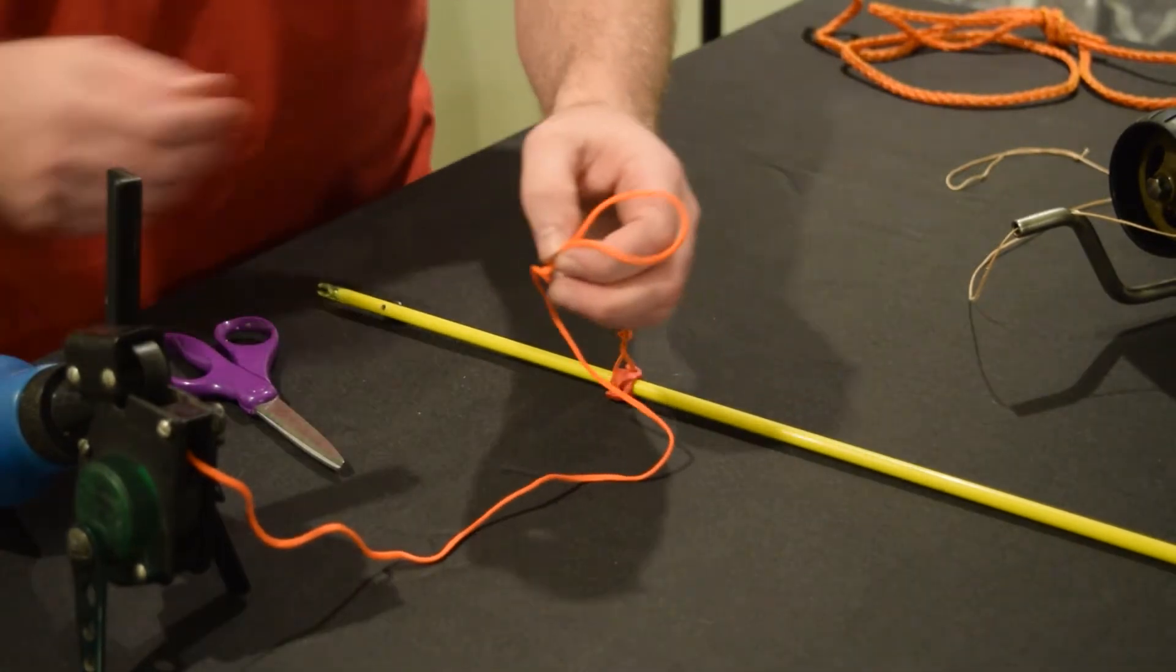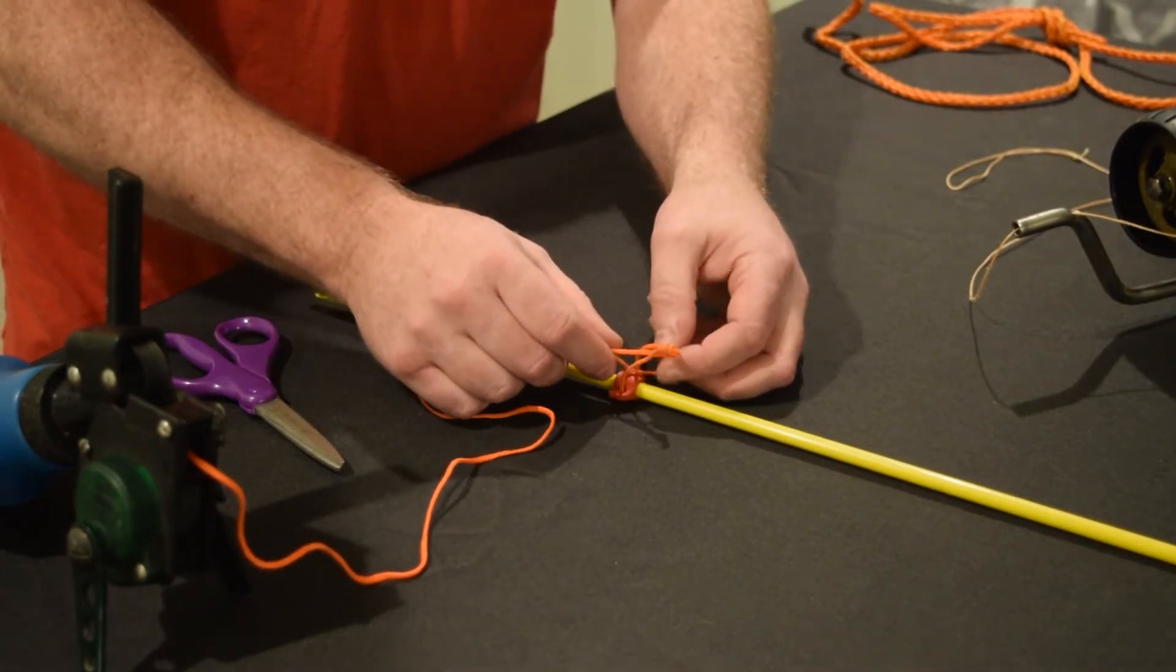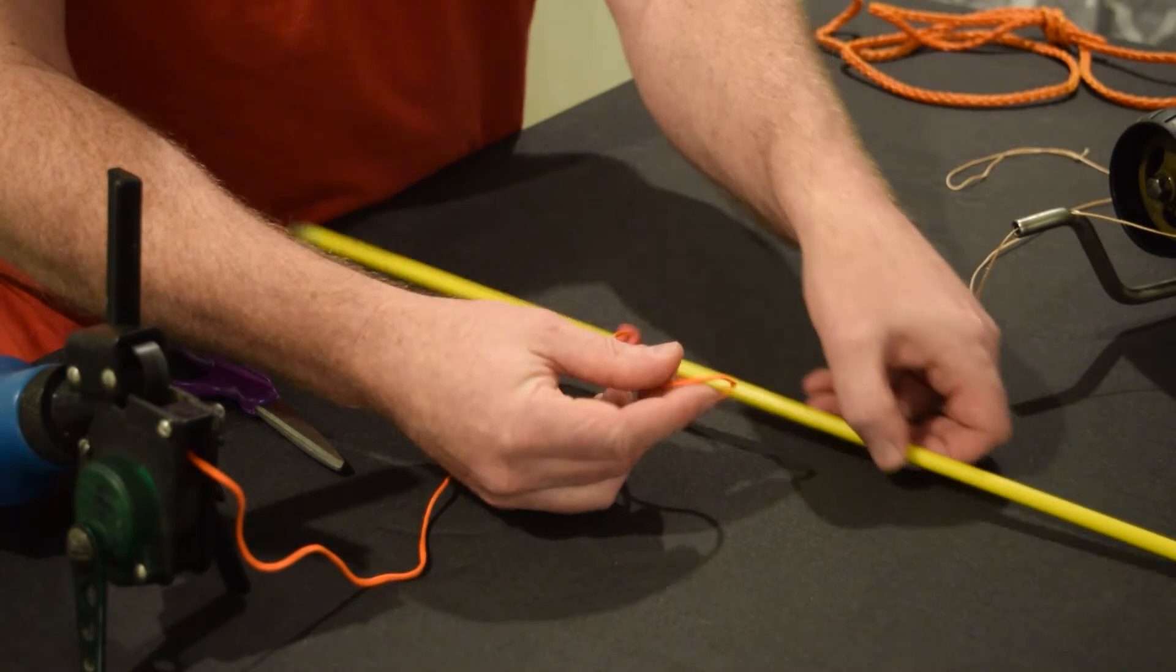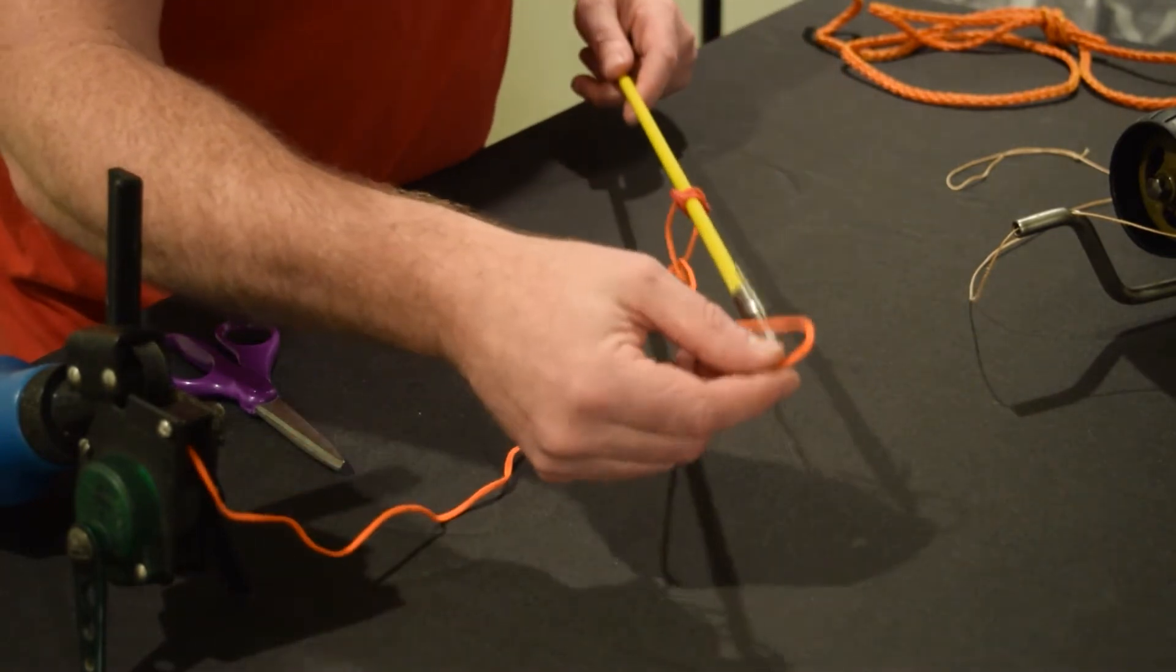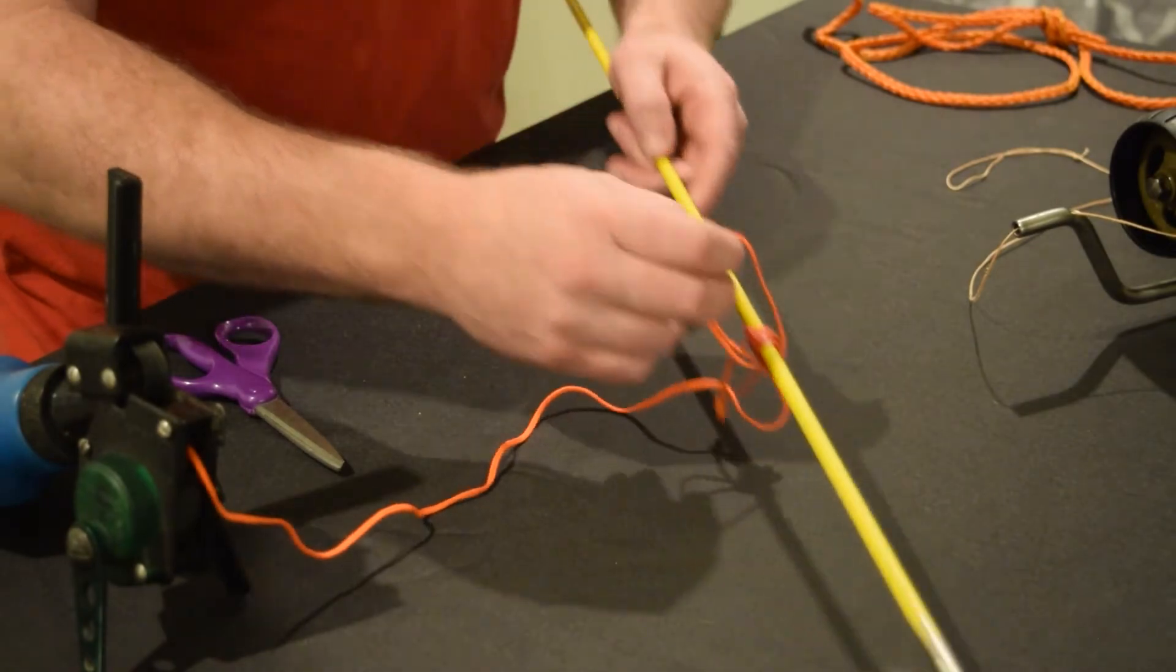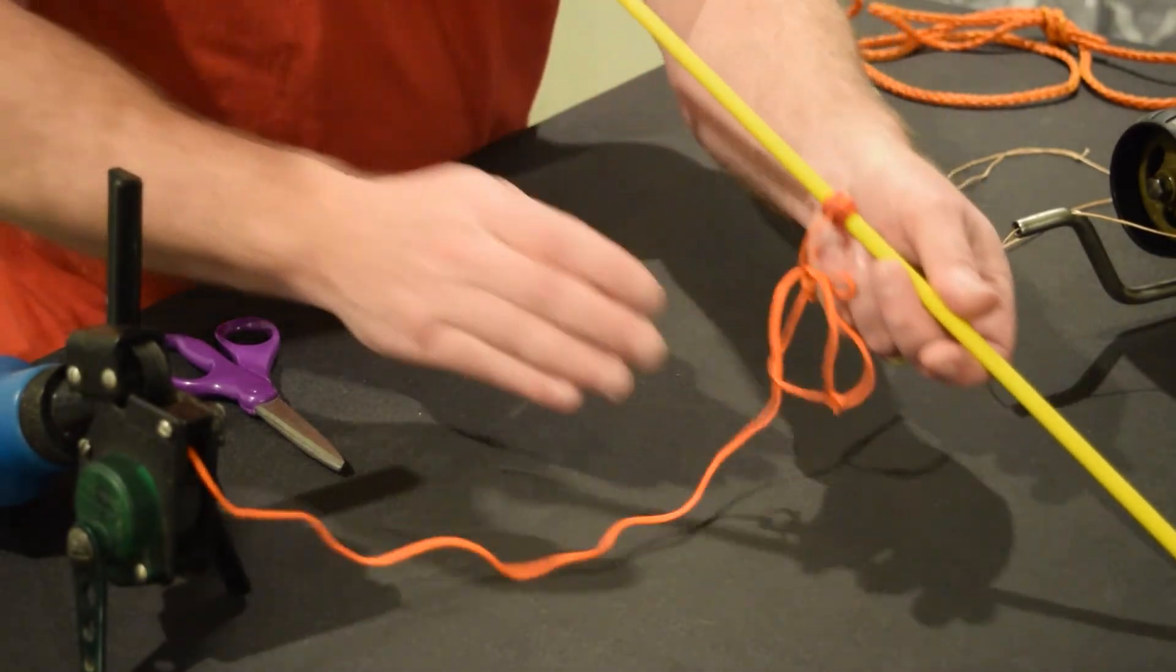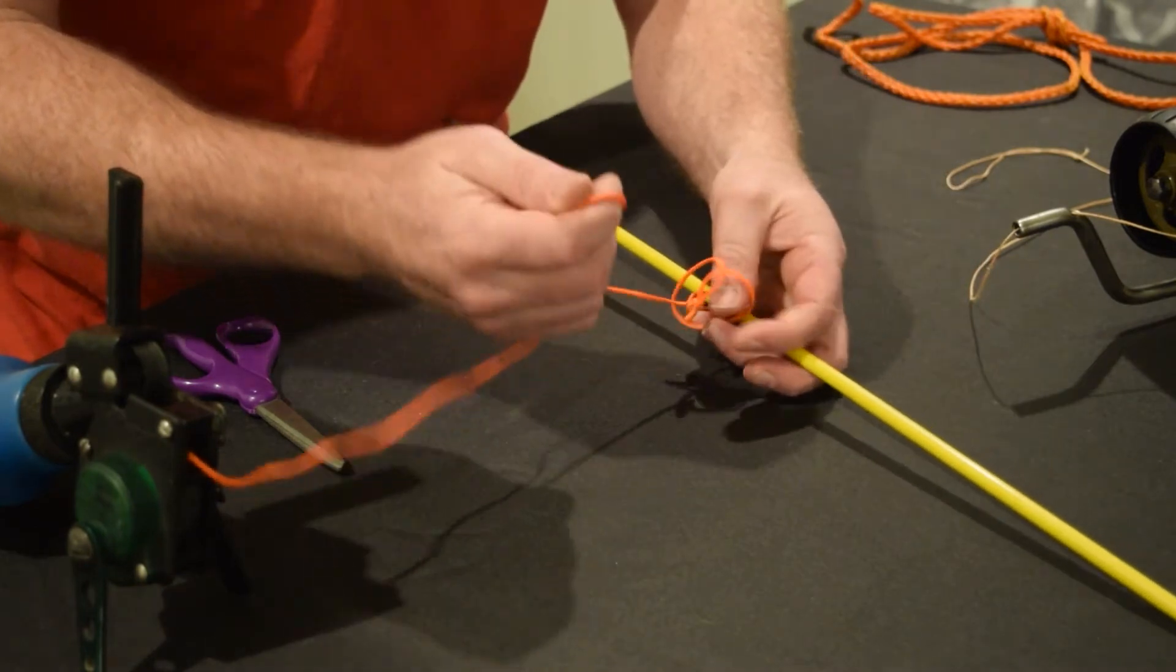As far as connection to the arrow is concerned, take the loop and feed it through the loop that's on the arrow. Then go down to the tip end of the arrow and wrap it over the tip. Come all the way down to the other end of the arrow and wrap it over the nock. And now you have a loop-to-loop connection that's been established.